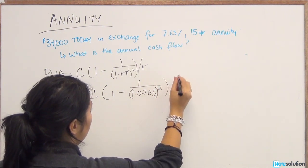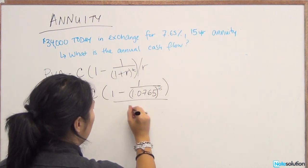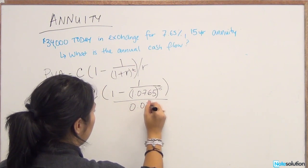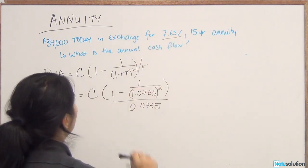And you divide the entire expression by 0.0765, which is just your interest rate.